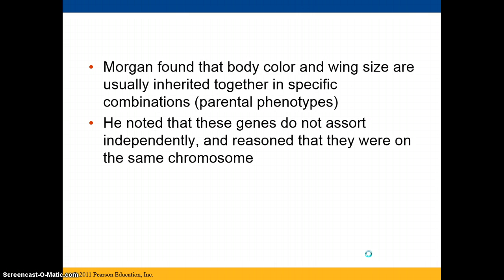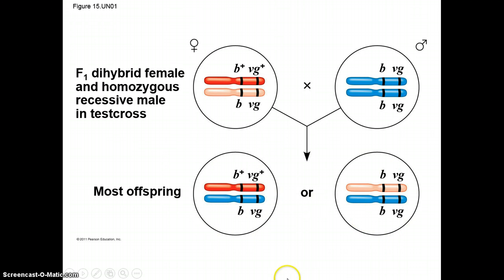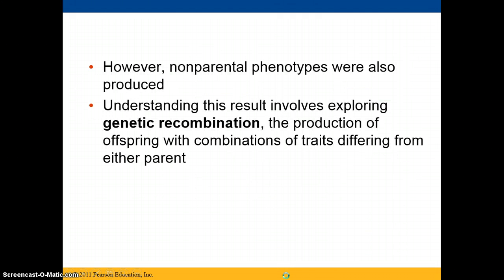Morgan also found that body color and wing size are usually inherited together in specific combinations which he called parental phenotypes, and he noted that these genes don't sort independently — they sort themselves together. He reasoned that they were on the same chromosome. He crossed an F1 dihybrid female with a homozygous recessive male in a test cross, and most of the offspring either looked like one parental type or the other.